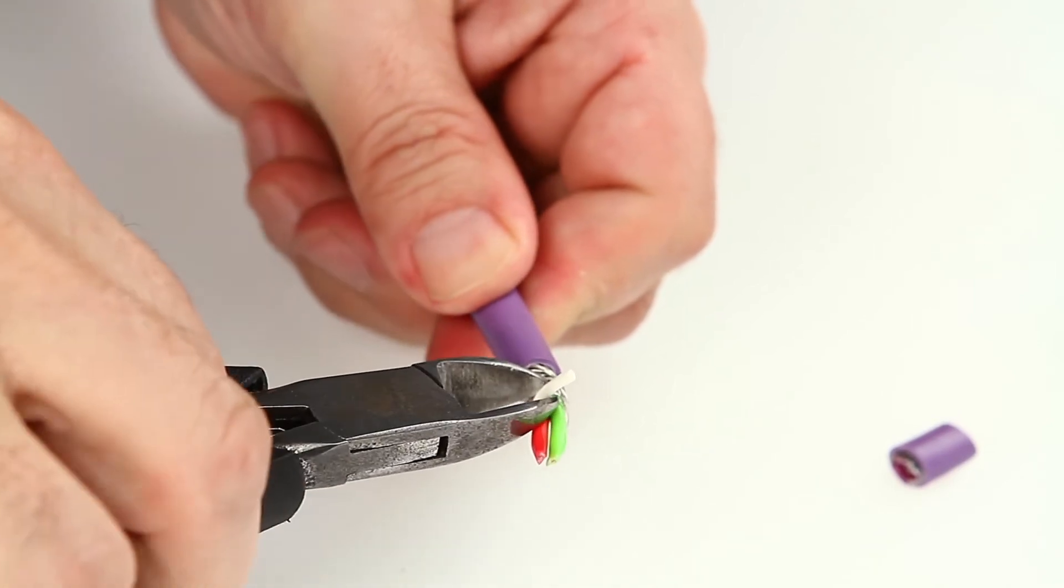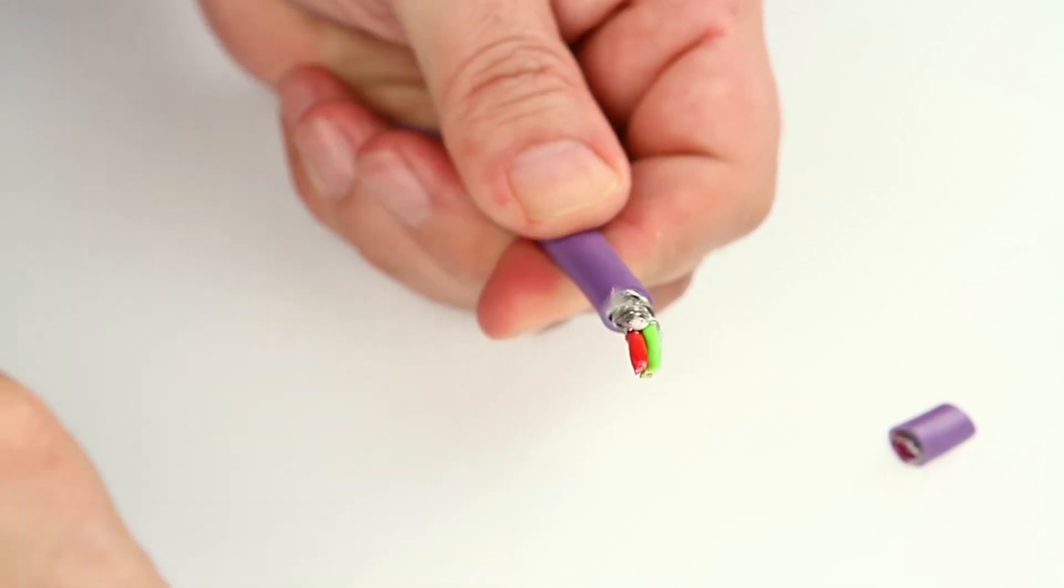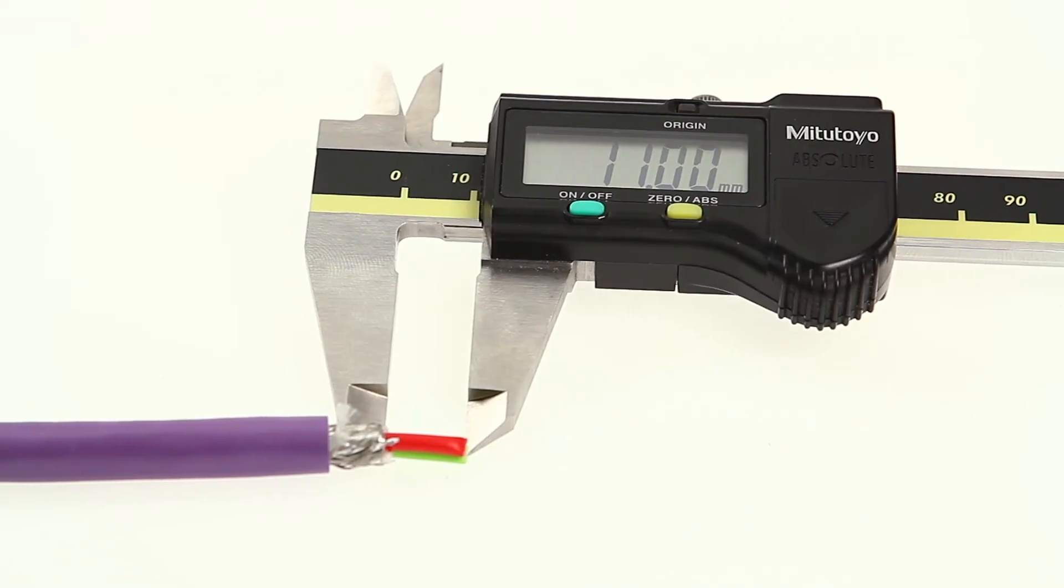Now check that the cable has been prepared properly. The dimensions should be 11mm on the front and 6mm on the rear.